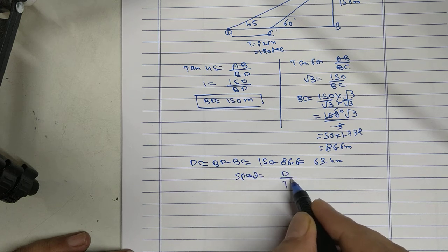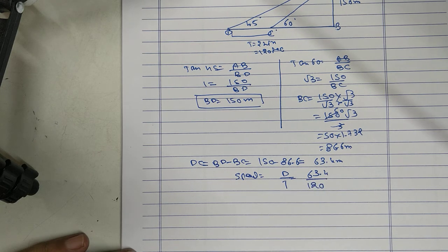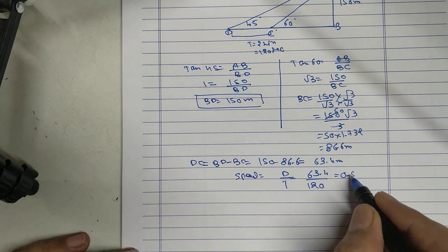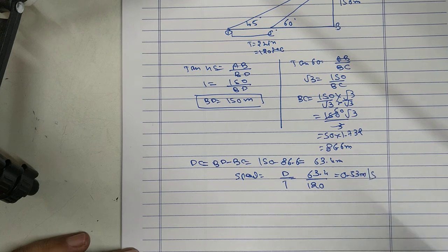Now find the speed. Distance upon time. Time is 120 seconds. I will get 0.53 meter per second.